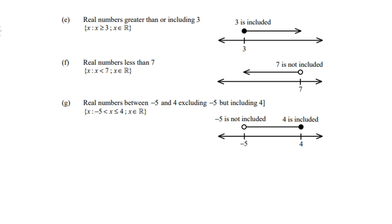Look at f, less than 7, but there's no equal sign. So an open circle for 7, and then a continuous line to the left to infinity. Look at g, between -5 and 4, but you must exclude -5, so an open circle. You must include 4, so a dot. Therefore, x lies between -5 and 4.